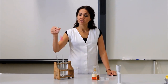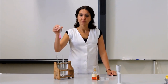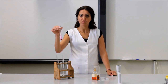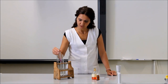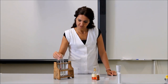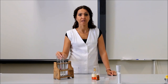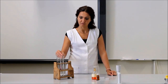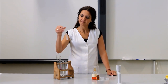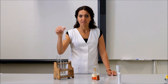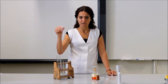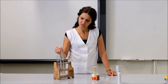A második kémcső rózsaszínű lett, ez a lúgos kémhatású oldat, ami kizárólagosan azt jelenti, hogy ez a nátrium-hidroxid oldat. A harmadik kémcső szintén színtelen maradt, az azt jelenti, hogy a kémhatása savas vagy semleges. Szükségünk van arra, hogy az első és a harmadik kémcsövet meg tudjuk egymástól különböztetni.